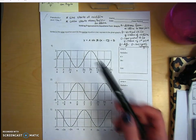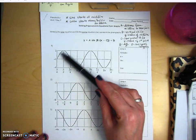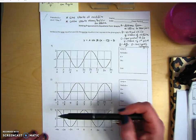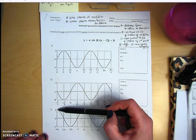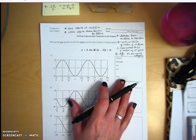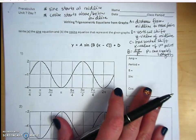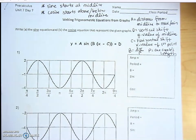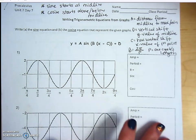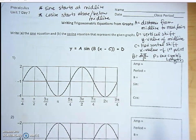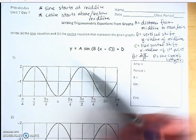Looking at these three graphs, you can see that this one starts at the midline — that's a sine graph. This one also starts at the midline — also sine. But this one starts above the midline, so that's a cosine. Our goal, per the directions, is to write both a sine equation and a cosine equation for each graph. Remember, cosine is just a shifted version of sine.